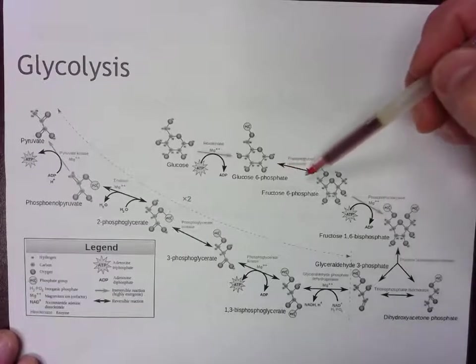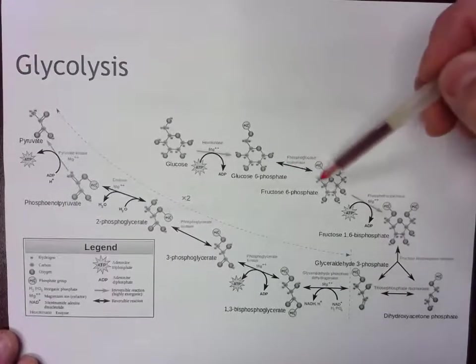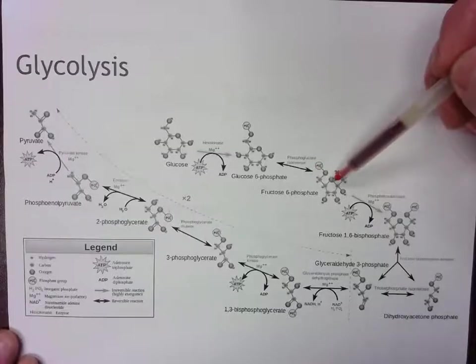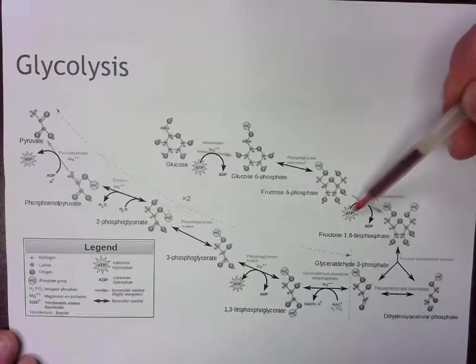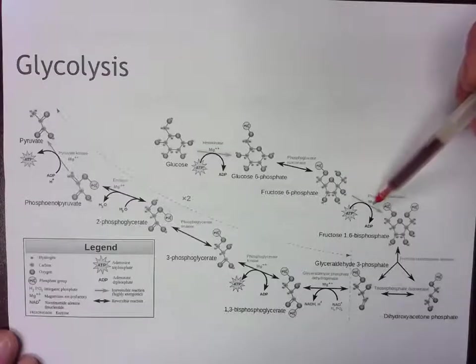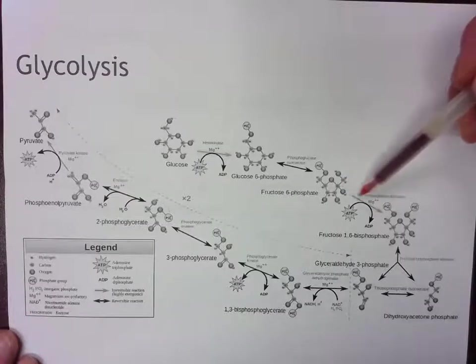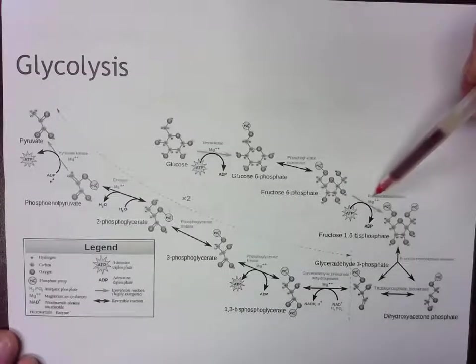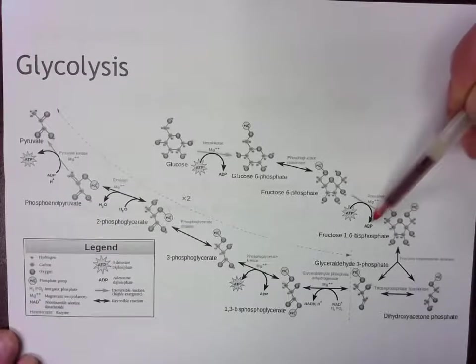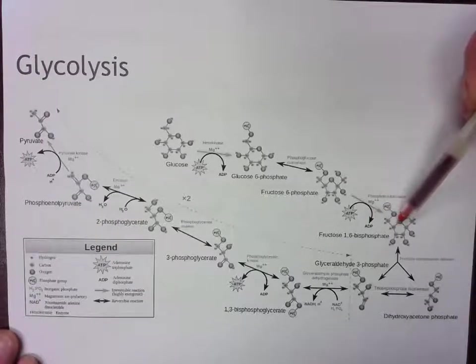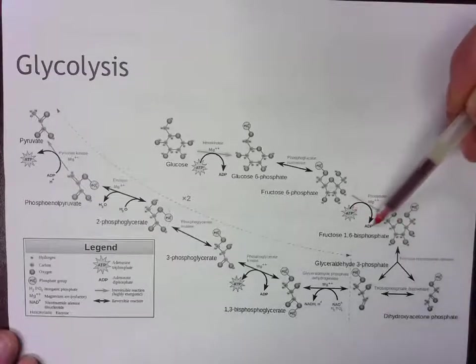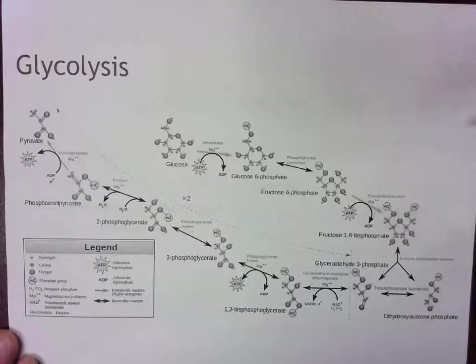And we move on to step two, nothing happens with ATP or NADH here. Then step three, we see ATP again as a reactant along with fructose 6-phosphate. In the presence of phosphofructokinase, ADP and fructose 1,6-bisphosphate are products. So ATP is again consumed in step three. Step three, one ATP gets consumed.